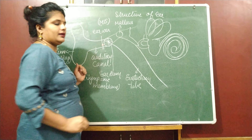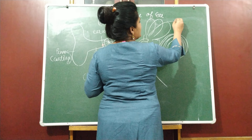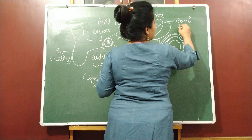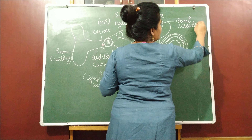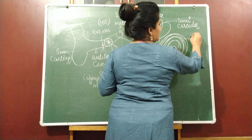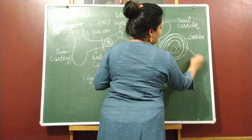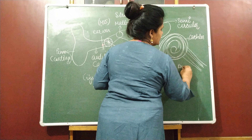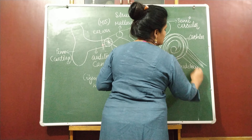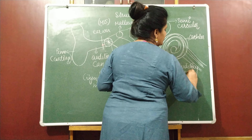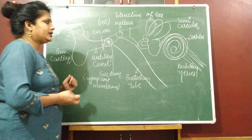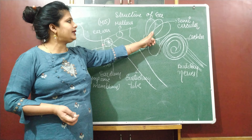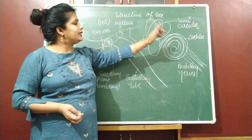So this is the part of the outer ear. Now in the outer ear, we also have another part that is called ear wax. The function of ear wax is that it collects dust particles and prevents the ear from dust and foreign particles. Now we will talk about the middle ear.